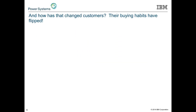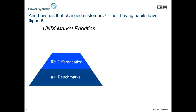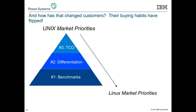Once people start to understand this, buying habits change. In the Unix market days, we led with benchmarks — my SPECjbb is better than yours — then system differentiation, then a three-to-five year TCO study. The Linux market priorities have changed. As I talk to customers, it's now almost a commodity-based market that begins with price — it's a total cost of acquisition environment: what does this solution cost me on day one?